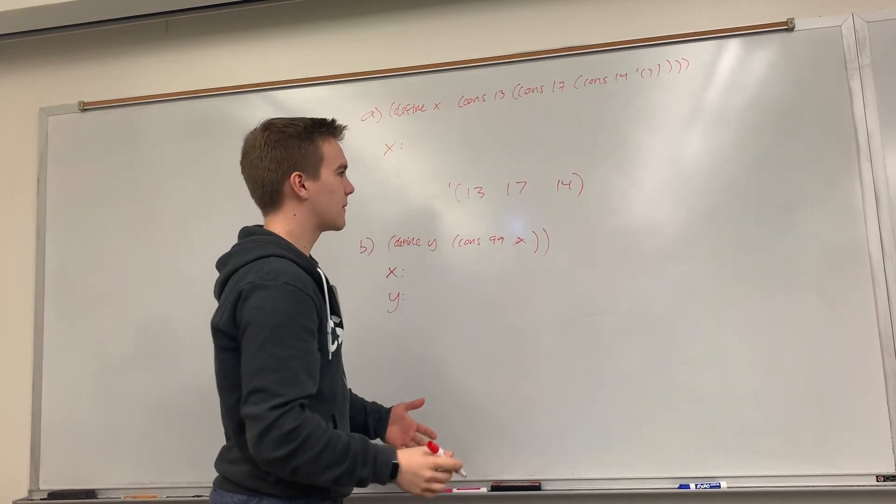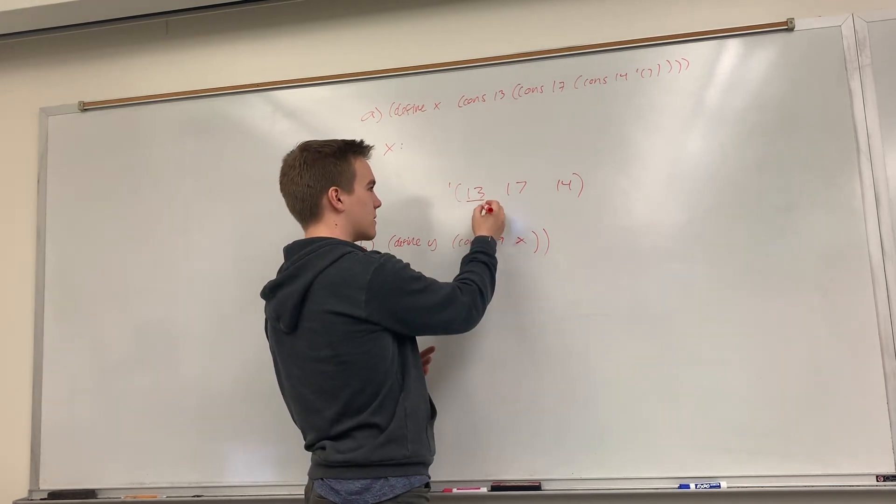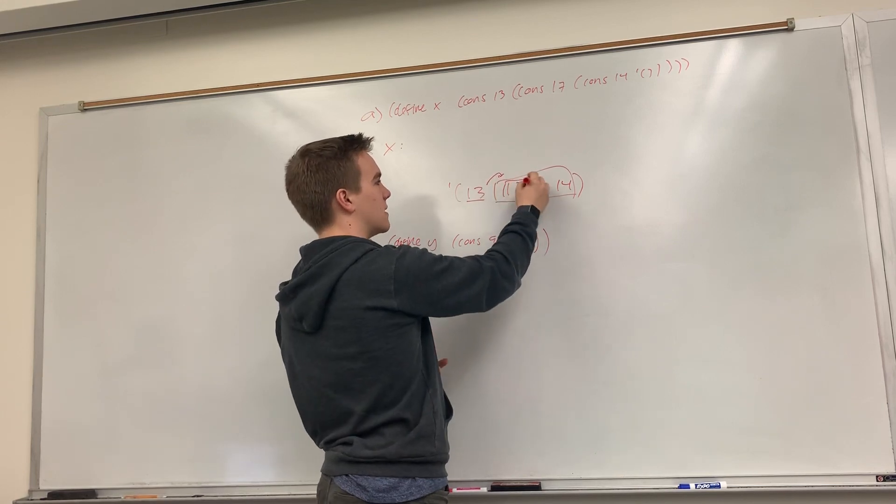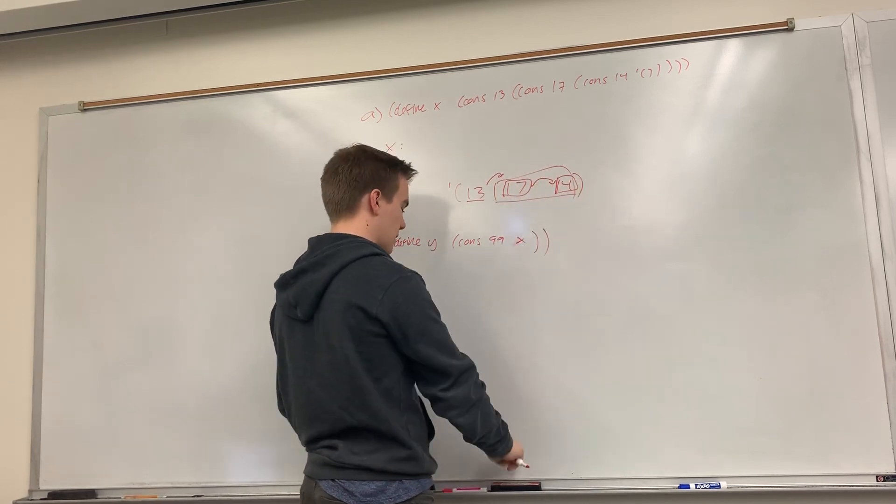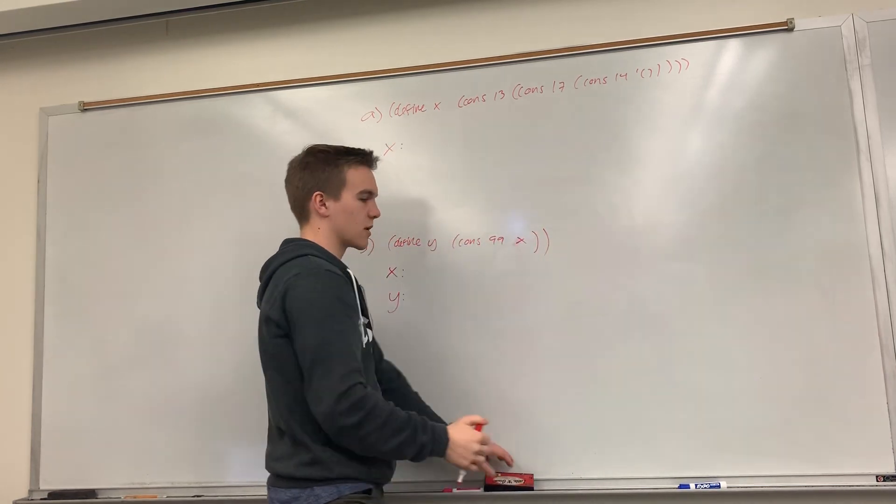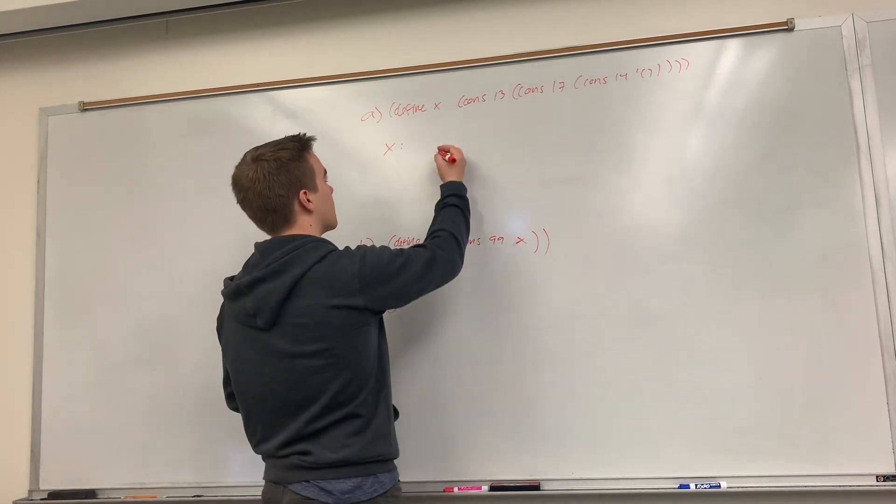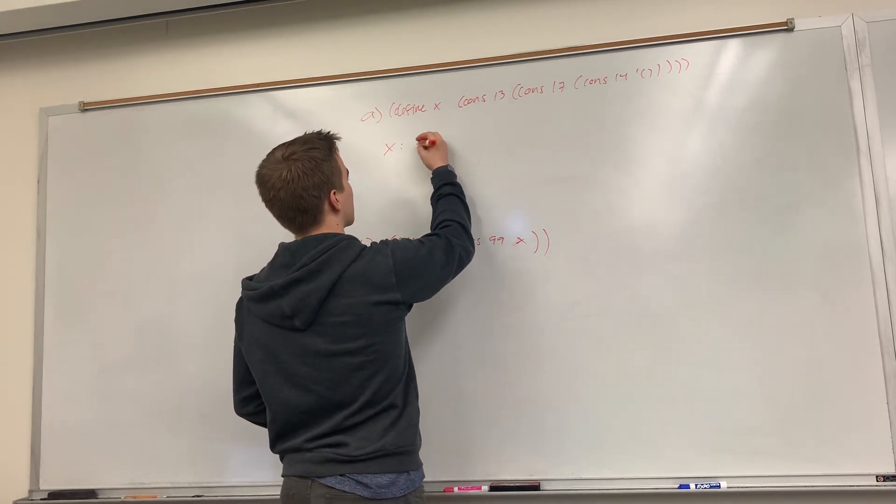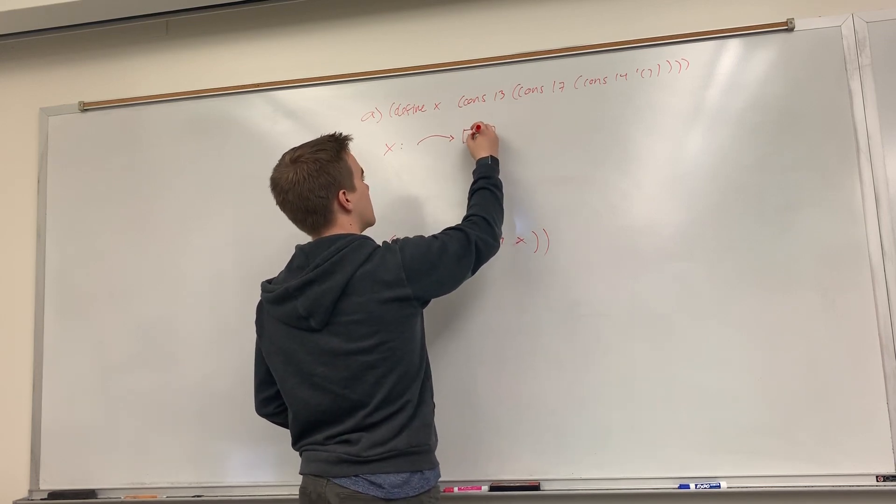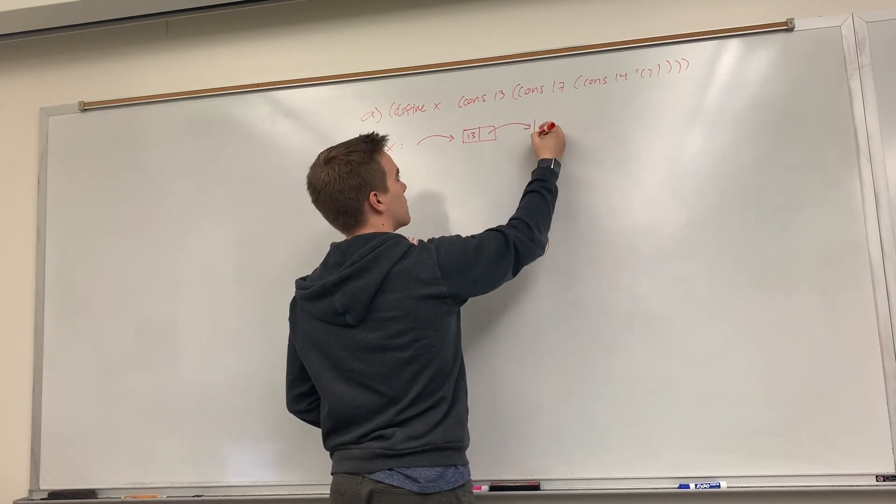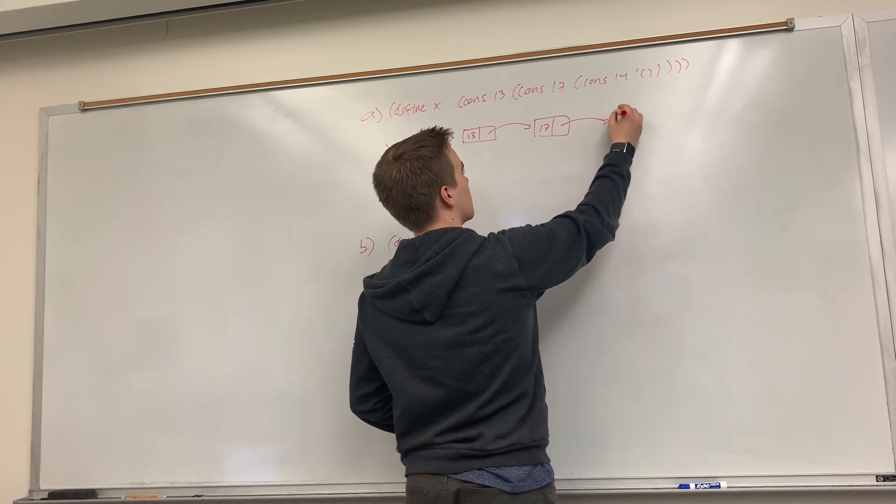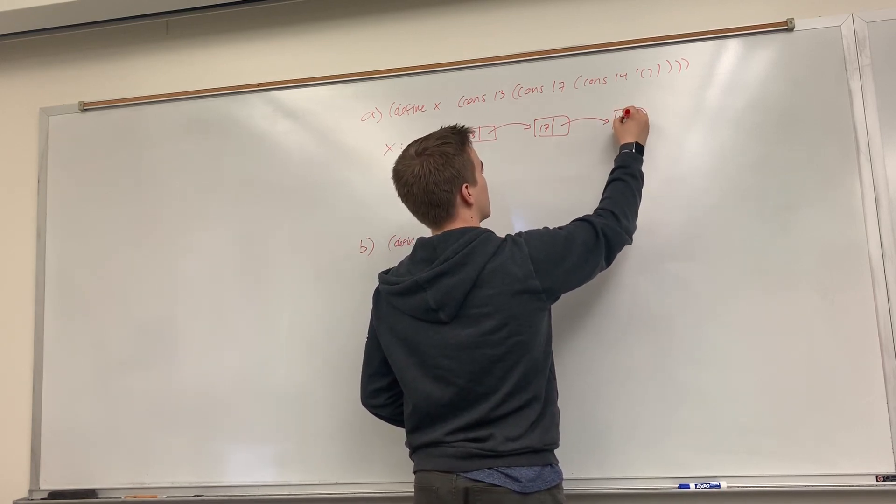But what this means in memory is that we have a car 13, and then a cdr which is a pointer to this with a 17 as the car and then a pointer to. So lists are made up of pairs of cars and cdrs where the cdr is a pointer to another pair or an empty list. So here this will be a pointer to, and we have our first pair with 13, and then another pointer to a pair with 17, and another pointer to a pair with 14, and an empty list.